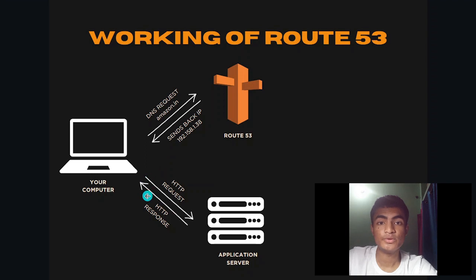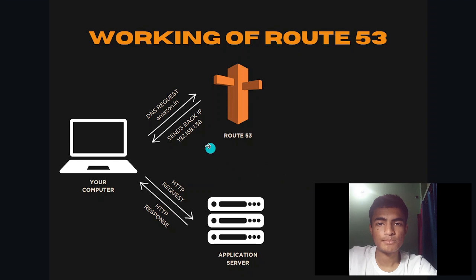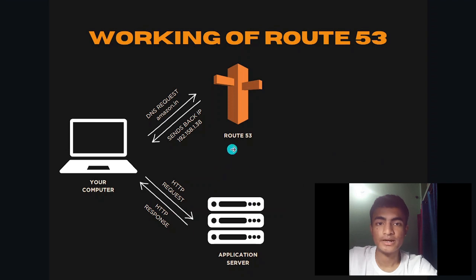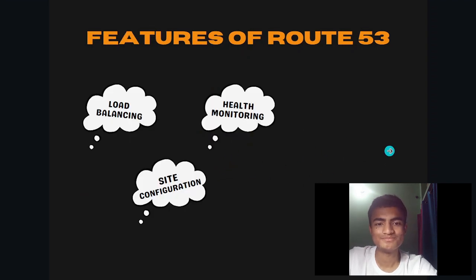So this is how DNS works and this is how Amazon Route 53 works. The first thing that happens is there's a DNS request, and then there is an HTTP request. All this happens behind the scenes and isn't visible to the end user.